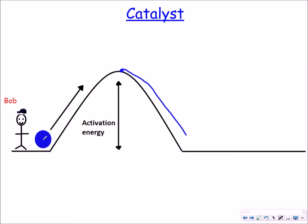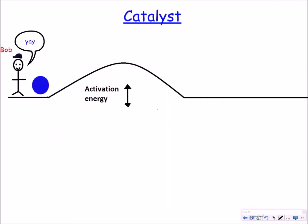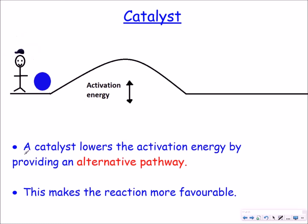Now the energy required to get the ball from over here to up here is called the activation energy. Now if you use a catalyst you can lower this activation energy, which means that Bob is now much happier because he's using less energy to get the ball to this point over here. The way a catalyst works is that it lowers the activation energy by providing an alternative pathway and this makes the reaction more favourable.